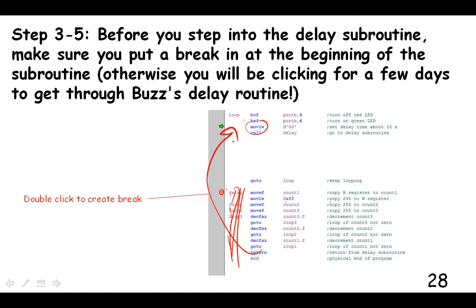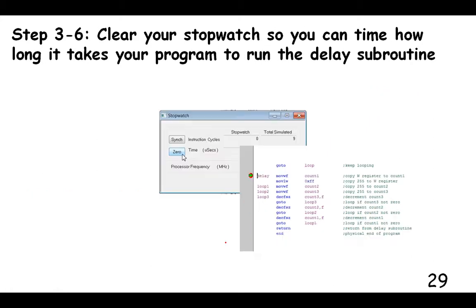Okay. So what you do instead is you double click on delay and it puts a break point into your step forward thing so that you can then execute this part of the program independently of everything else. So put the break point in, zero your stopwatch, so that you can tell how long this delay routine takes.